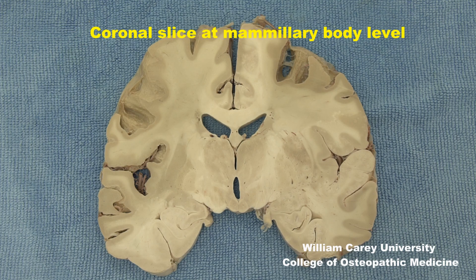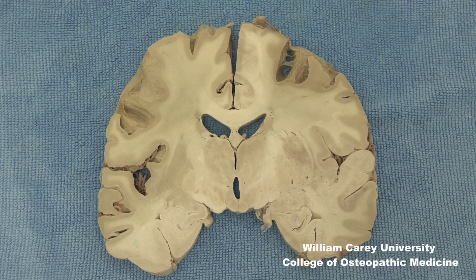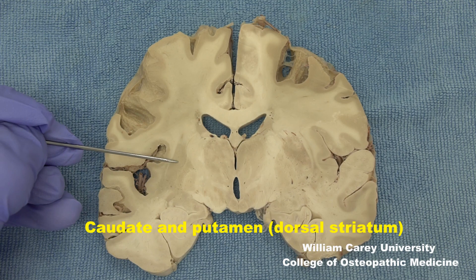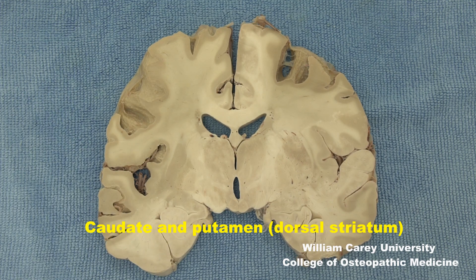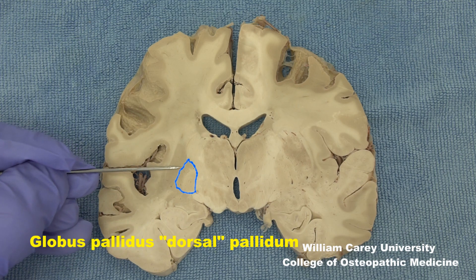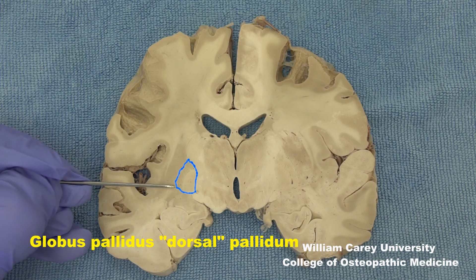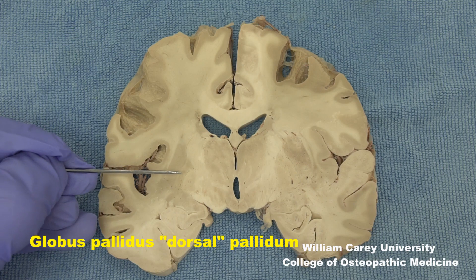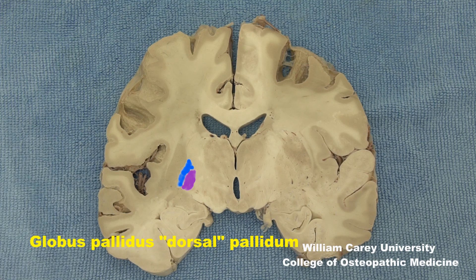First we are identifying telencephalic and then diencephalic components. First, for the neostriatum or dorsal striatum: the caudate and the putamen. For the pallidum — globus pallidus specifically — the external and the internal divisions or segments of globus pallidus.